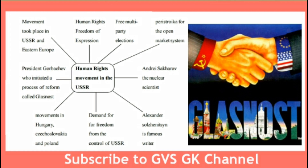The keywords are: Human Rights, Freedom of Expression, Free Multiparty Elections — which they are demanding in the USSR — Perestroika for the Open Market System, Andrey Sakharov the Nuclear Scientist, Alexander Solzhenitsyn the famous writer, and demand for freedom from the control of USSR. Movements in Hungary, Czechoslovakia and Poland, and President Gorbachev who initiated a process of reform called Glasnost.